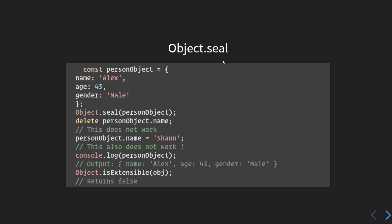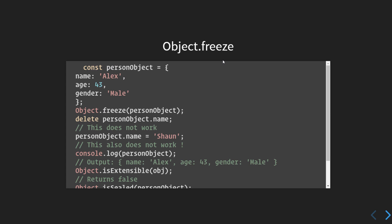On the screen you can see the same person object has been sealed. If we try to delete the name property, this will not work. If we try to modify the name property, this also doesn't work when using the seal method. Logging the person object shows the exact same structure as before sealing. Checking Object.isExtensible(person) returns false, since seal works like preventExtensions — you cannot add more key-value pairs.